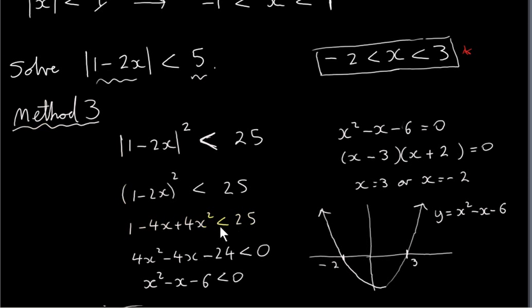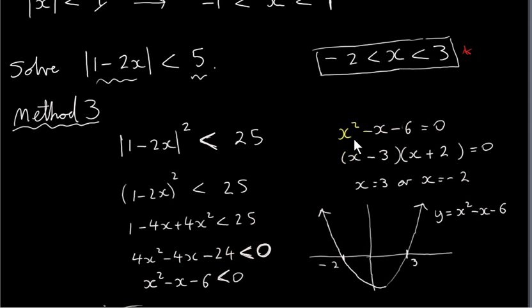So what we're aiming for now is a quadratic inequality. We square out one minus two x, bring the 25 over to get it into standard form with zero on the right-hand side. We then divide everything by plus four — since we're dividing by a positive number, the inequality remains less than — which makes it easier to work with. The first step is to solve the equation x squared minus x minus six equals zero.